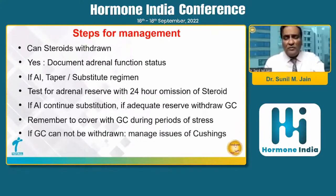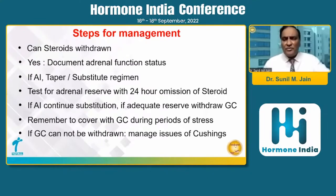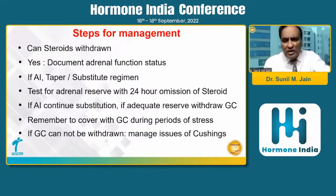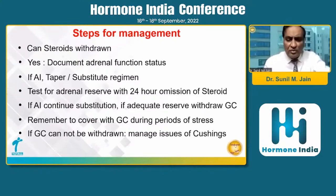But if the glucocorticoid cannot be withdrawn, then we have no choice — we have to manage all the consequences of cortisol excess. The most important are obesity and osteoporosis. If the patient has developed diabetes or hyperglycemia, we manage whatever disorder they have from cortisol excess. Many such patients were seen during the COVID era, including complications from steroid excess. The top three issues for medical management are obesity, diabetes, and osteoporosis.